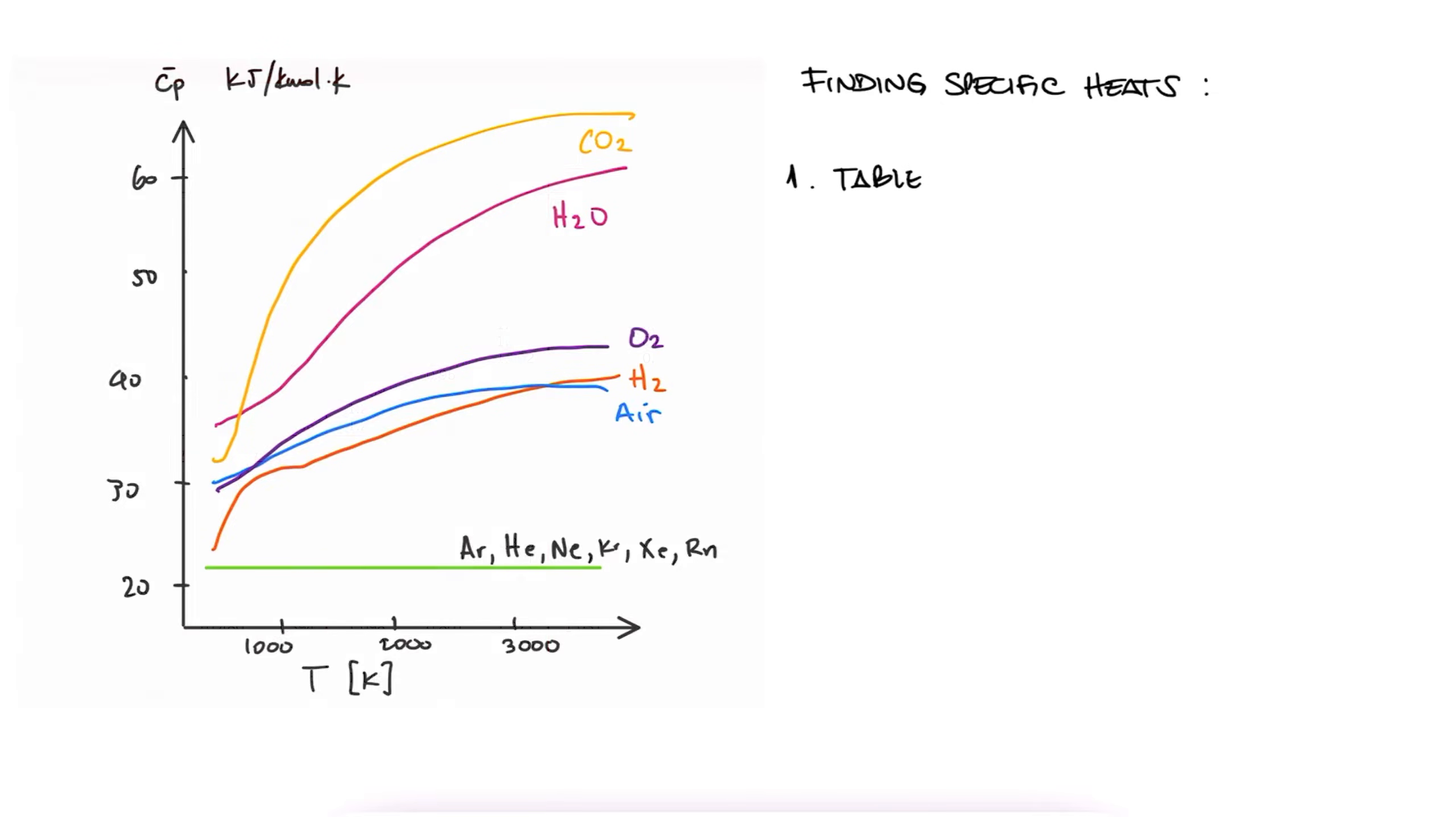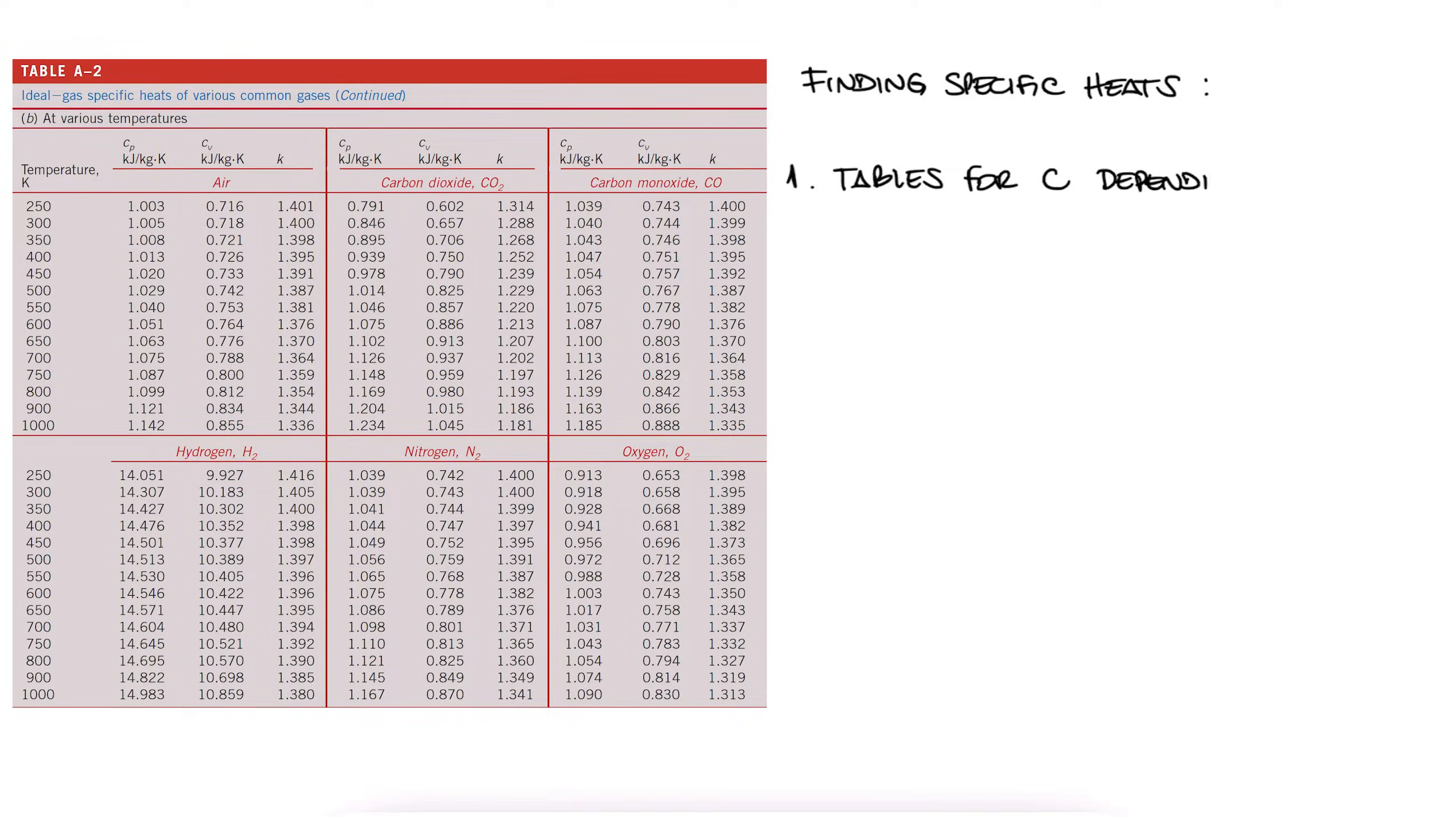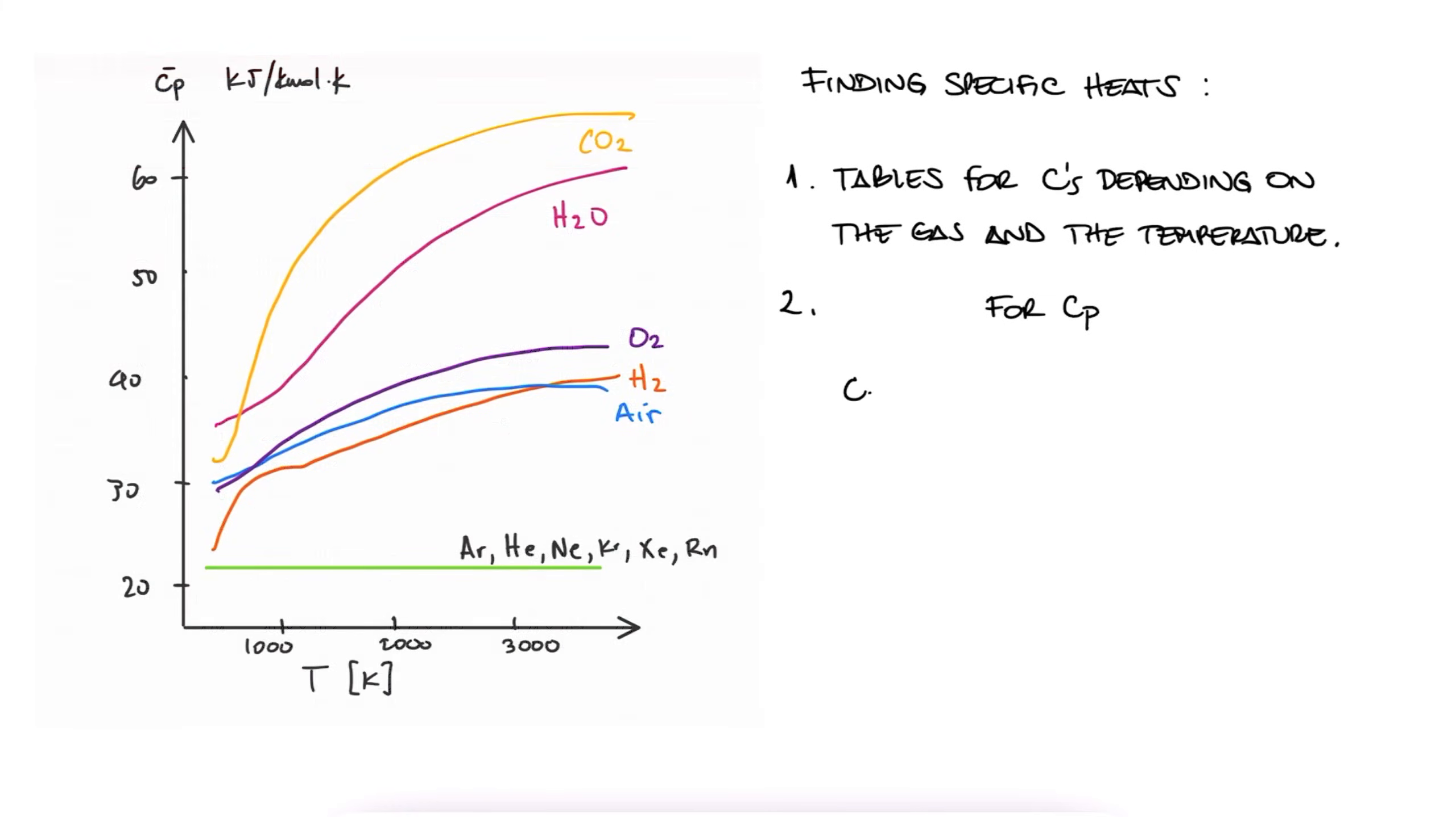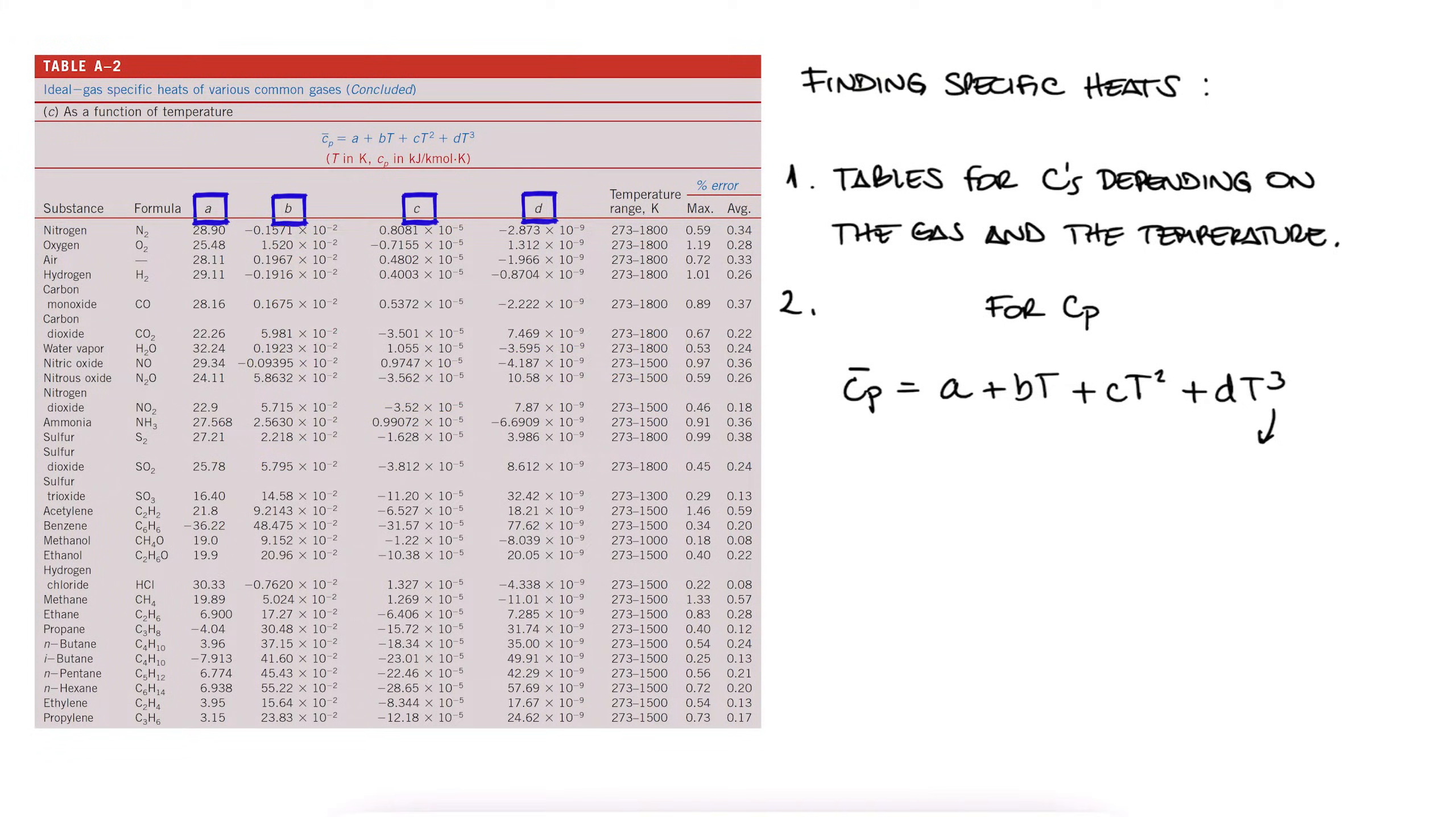The first one, we have a table with the ideal gas specific heats of various common gases for different temperatures, and the second one, if you need the specific heat for constant pressure for a temperature that you don't see there, you have tables for the coefficients of a third degree polynomial fit so that you can calculate Cp bar for any given temperature.